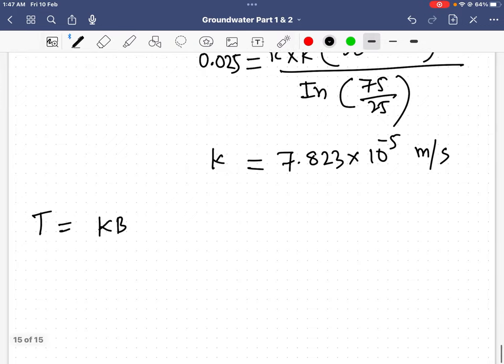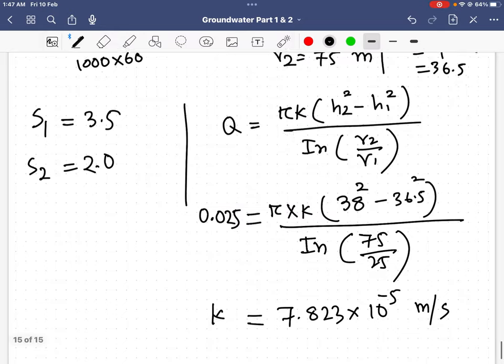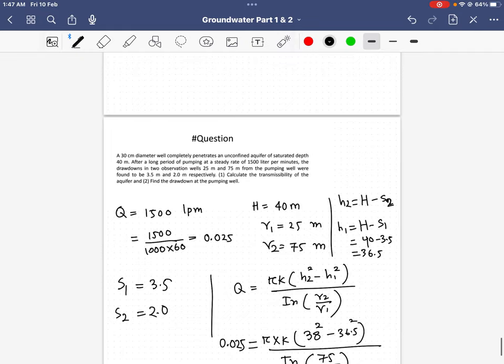Once I get K, I can easily get T because I have to multiply only K and H. So it will be 7.283 times 10 to the power negative 5 times 40 meters. If I calculate, I will get 3.13 times 10 to the power negative 3. This is my transmissibility.